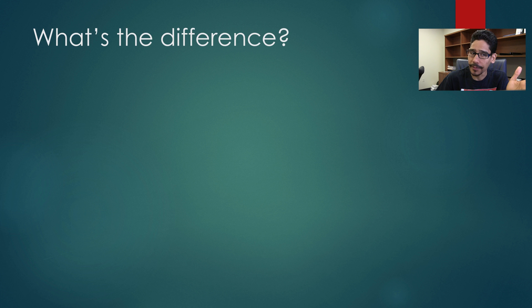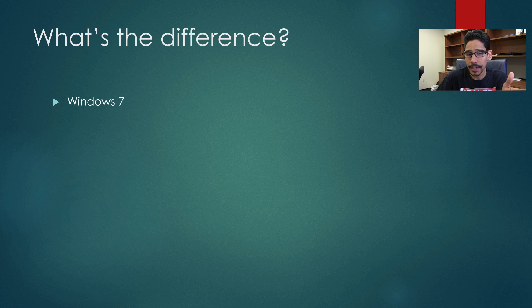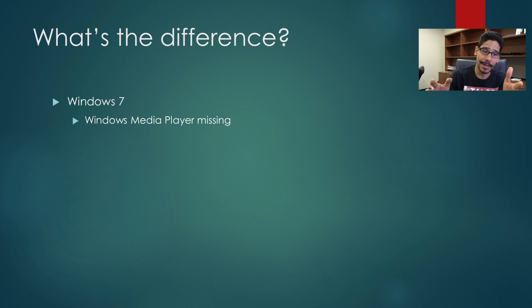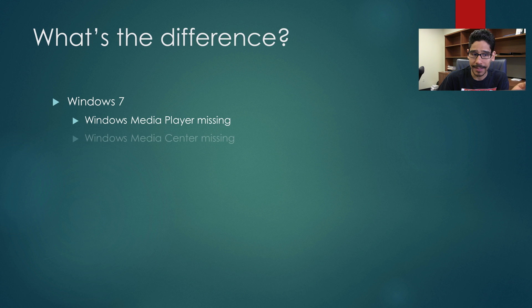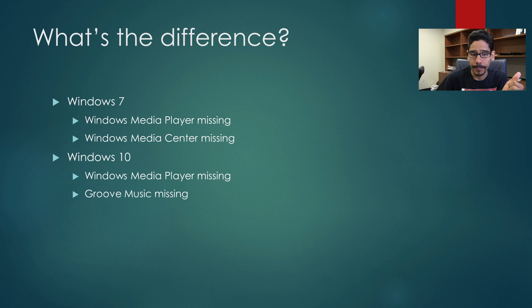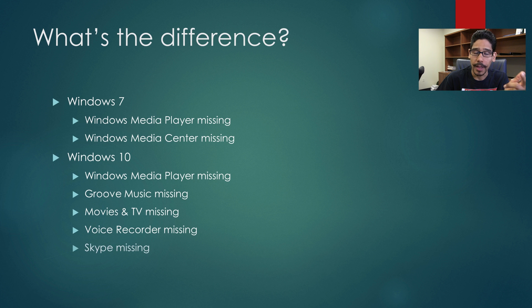Now what's the difference? For Windows 7 K or KN, the following is removed from the operating system: Windows Media Player and Windows Media Center. For Windows 10, Windows Media Player, Groove Music, Music and TV, Voice Recorder, and Skype are missing.